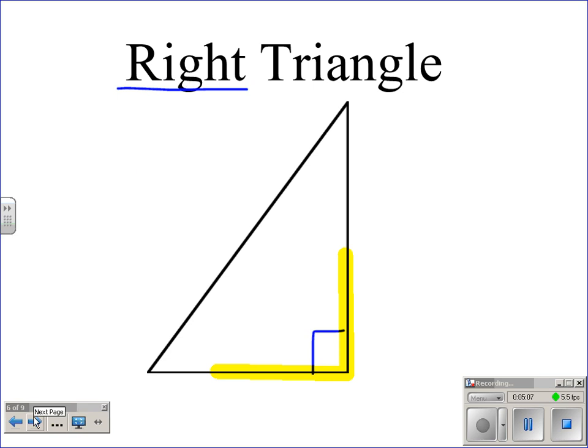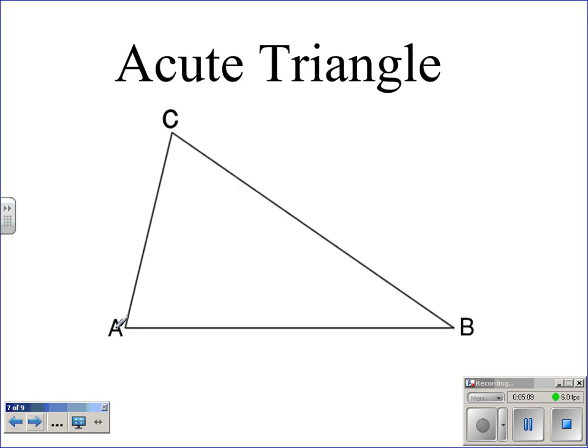If it does not have a right angle, it might have a bunch of acute angles. Acute angle triangles have all three angles that form acute angles. Here you can tell that angle A, B, and C, none of them are 90 degrees or larger. None of them make that perfect L. They're all acute little angles. So therefore, if they have three acute angles, we call it an acute triangle. Easy, right?